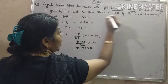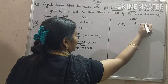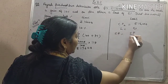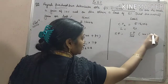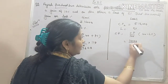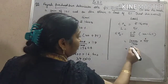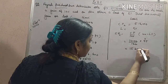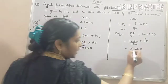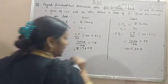For the second TV, there is a loss. CP is the same: Rs. 16,000. Loss is 5%. SP will be equal to CP divided by 100, multiplied by (100 minus loss percentage). So it is 16,000 divided by 100, multiplied by 95, which gives Rs. 15,200. This is SP for the second television set.